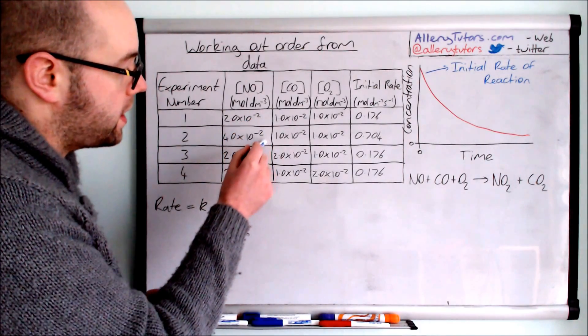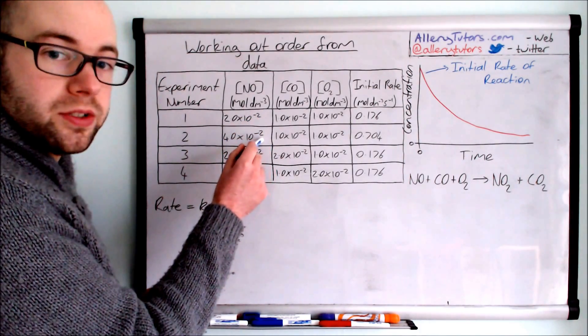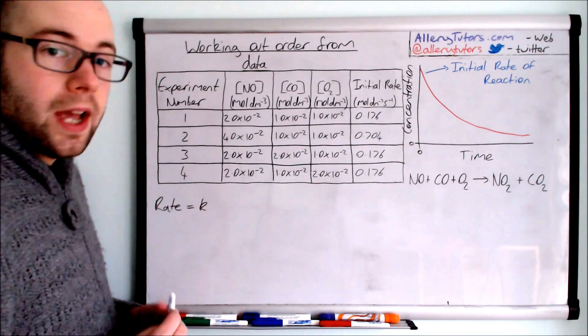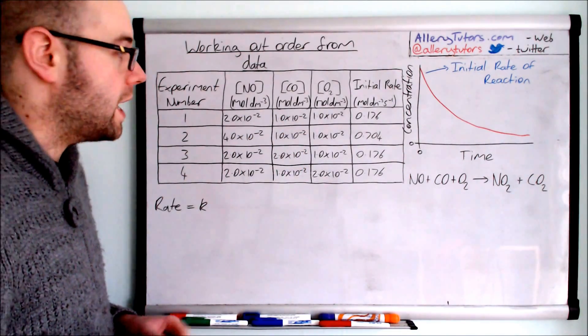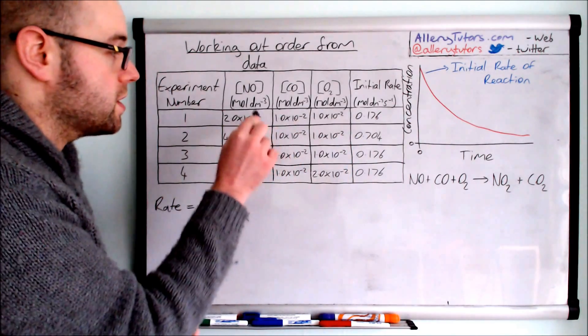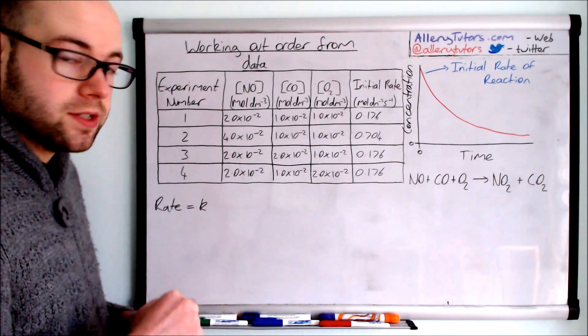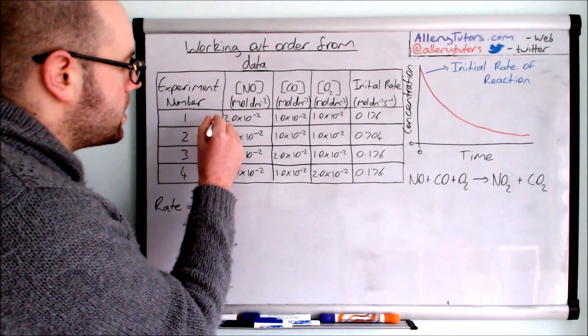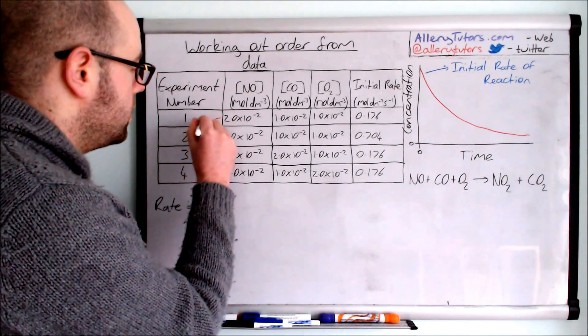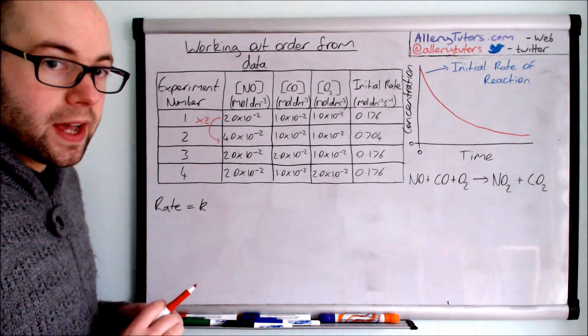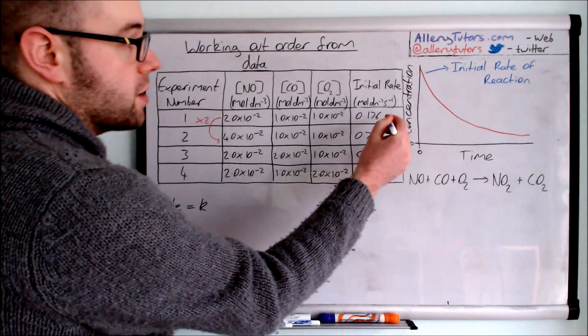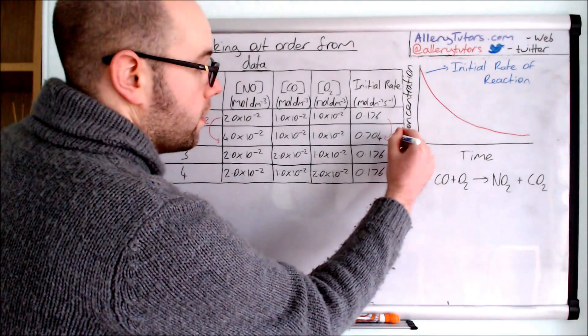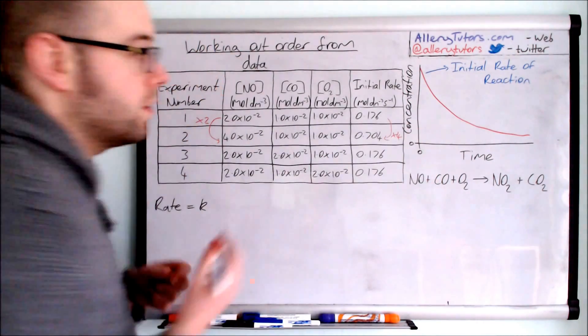You can see here we've doubled the concentration of NO here. But crucially carbon monoxide and oxygen, their concentrations remain the same. So we know that any changes in rate is because of NO and not because of these two. We're going to annotate this diagram. This has effectively been doubled. But if you look at the actual rate over here the rate is actually quadrupled. It's increased by four. So we're going to put times four on that side.